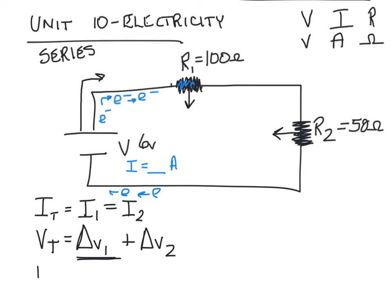Finally, you have your resistance. So the way to approach problems like this, step one, is to figure out what your total resistance is. That's always going to be step one. Total resistance, in this case, is equal to 150 ohms.